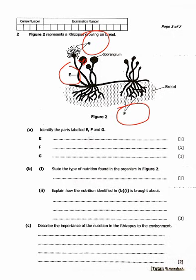We come to B. So B1 we are saying, state the type of nutrition found in the organism in figure 2. So like what I've said, these are called saprophytic nutrition. So we are saying the nutrients found in this organism that is mentioned in this figure, it is called saprophytic nutrition.